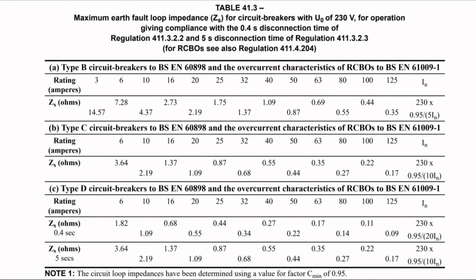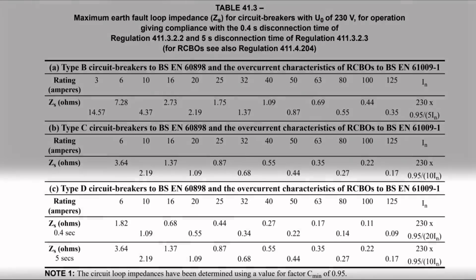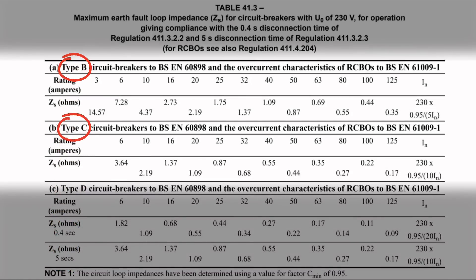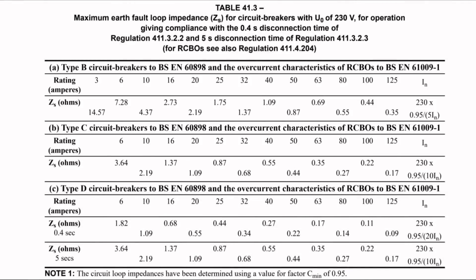A couple of points about this table: the values are displayed in a zigzag format to prevent neighbouring numbers from merging. Also, the type D MCB shows two ZS values for 0.4 seconds and 5 seconds, whereas type C and type B only show one value each. This is because when a fault of negligible impedance occurs on a circuit protected by type B or type C MCBs, the breakers are so responsive they trip within 0.4 seconds — in fact within 0.1 seconds.